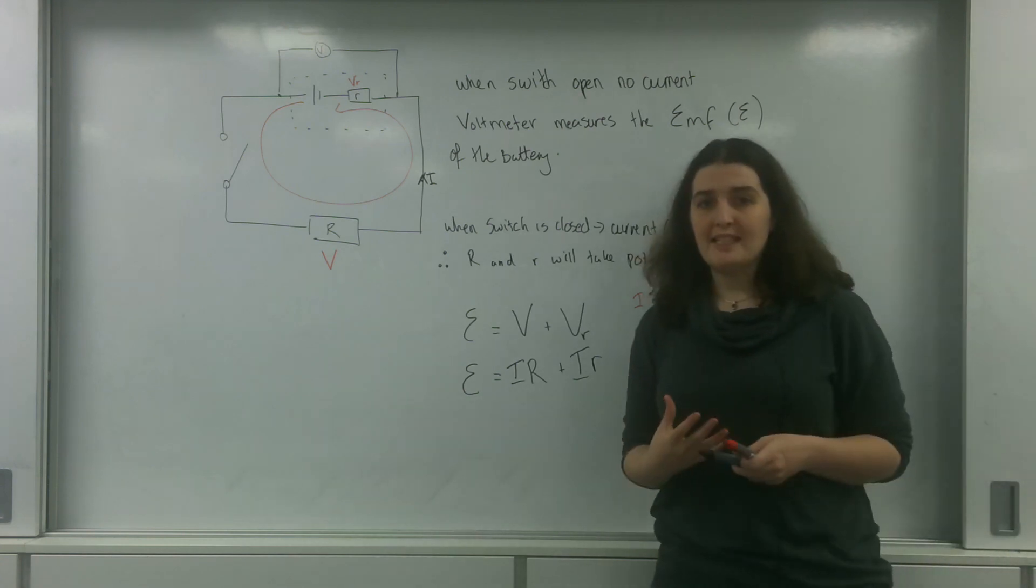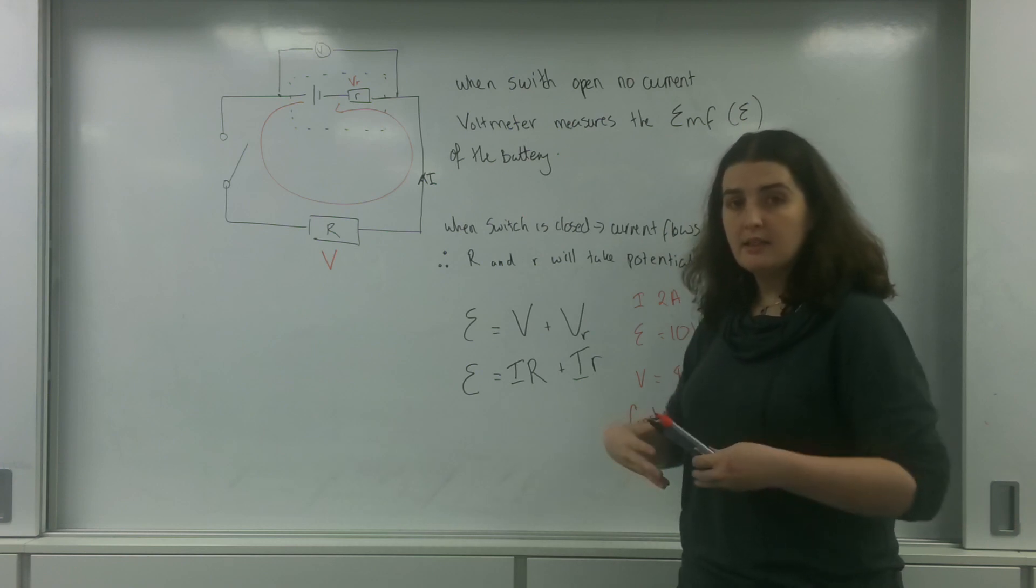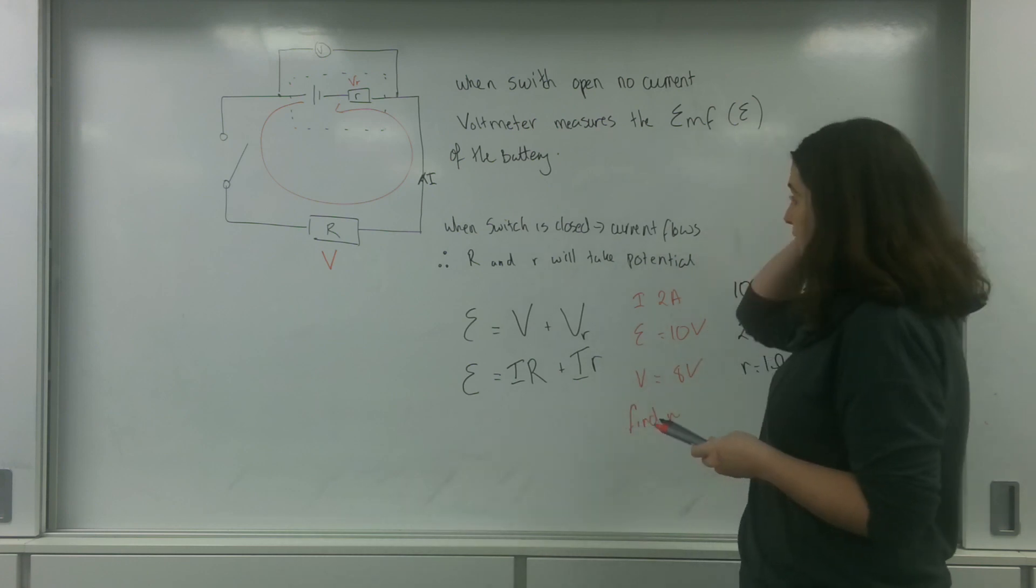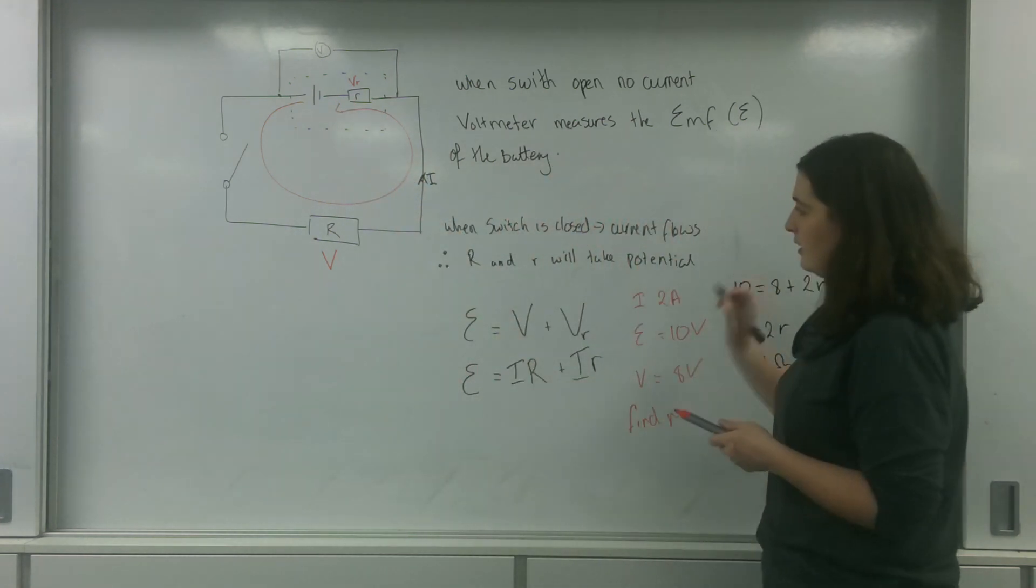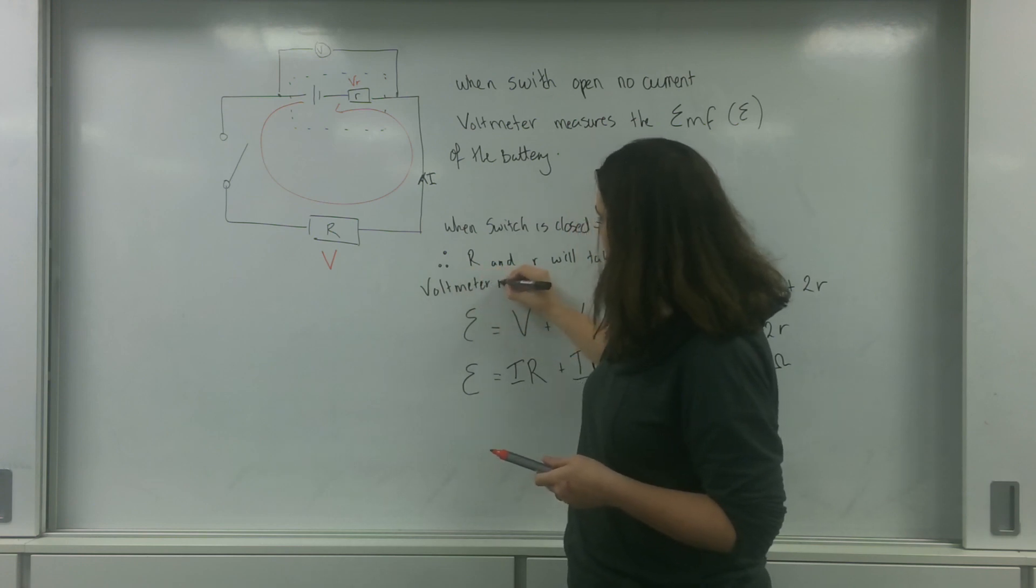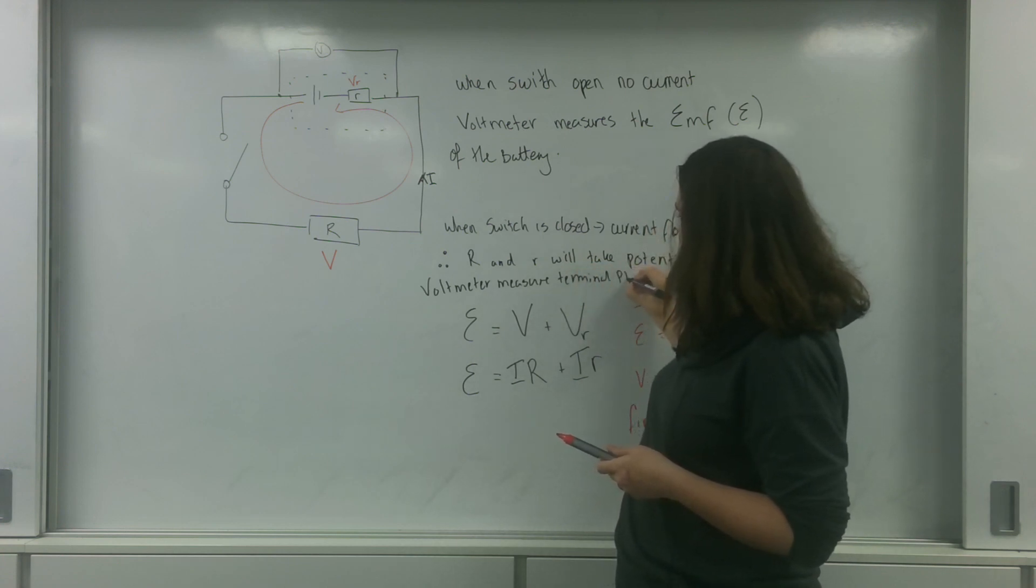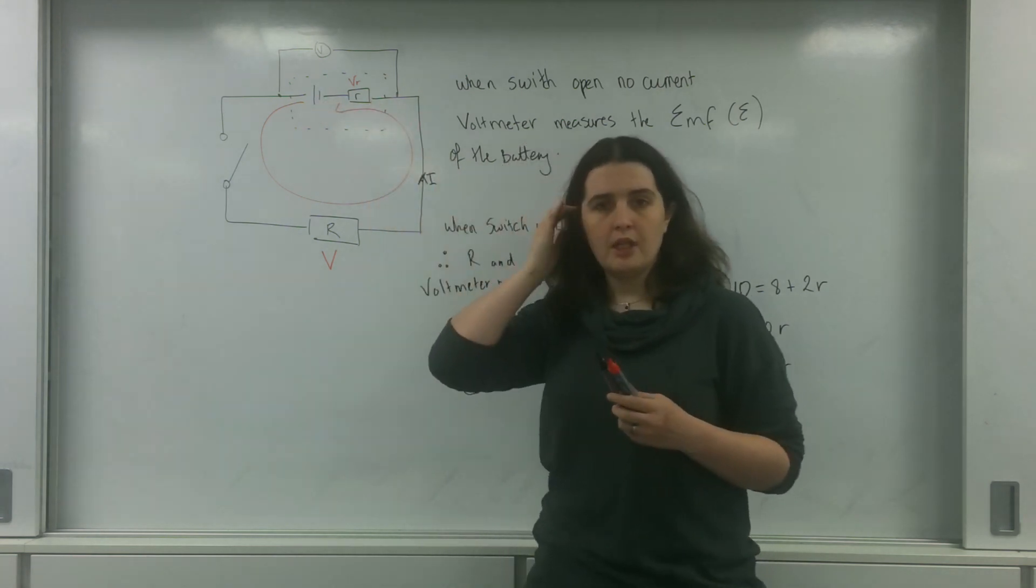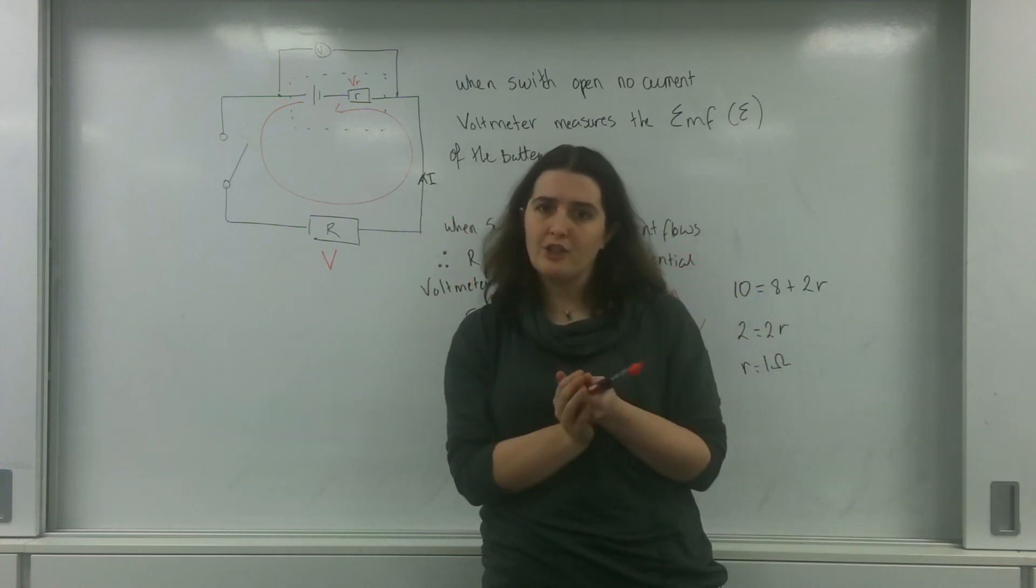So all internal resistance is, is this idea that inside the cell of a battery, there is basically something wasting energy. Now importantly, the voltmeter when current is flowing here measures the terminal potential difference. So this voltmeter is going to measure the voltage that is going to the rest of the circuit. It's measuring the voltage that's leaving the terminals of the battery itself.